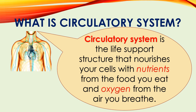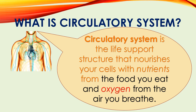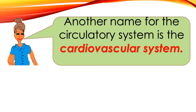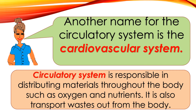The circulatory system is the life support structure that nourishes your cells with nutrients from the food you eat and oxygen from the air you breathe. Another name for the circulatory system is the cardiovascular system. It is responsible for distributing materials throughout the body such as oxygen and nutrients, and it also transports wastes away from the body.